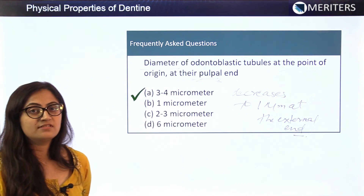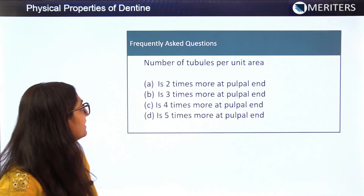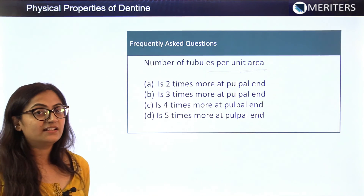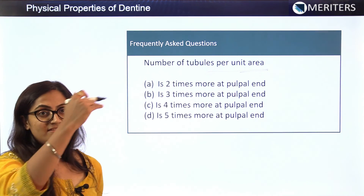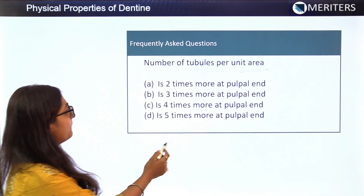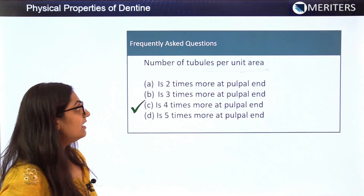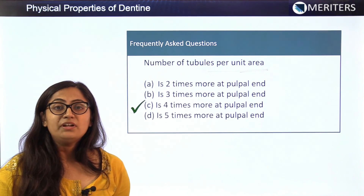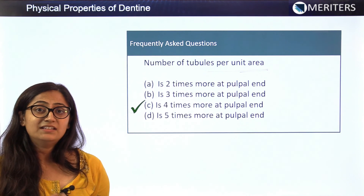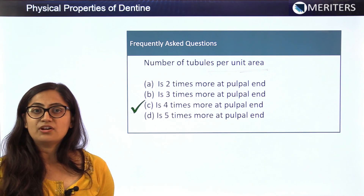Another fact-based question concerns the number of tubules per unit area. The number of tubules per unit area from pulp to the external surface is in a ratio of 4 to 1 — so there are 4 times more tubules at the pulpal region. Additional facts: the thickness of dentine is around 3 to 10 micrometers; the number of tubules per square millimeter at the pulpal end is around 50,000 to 90,000.